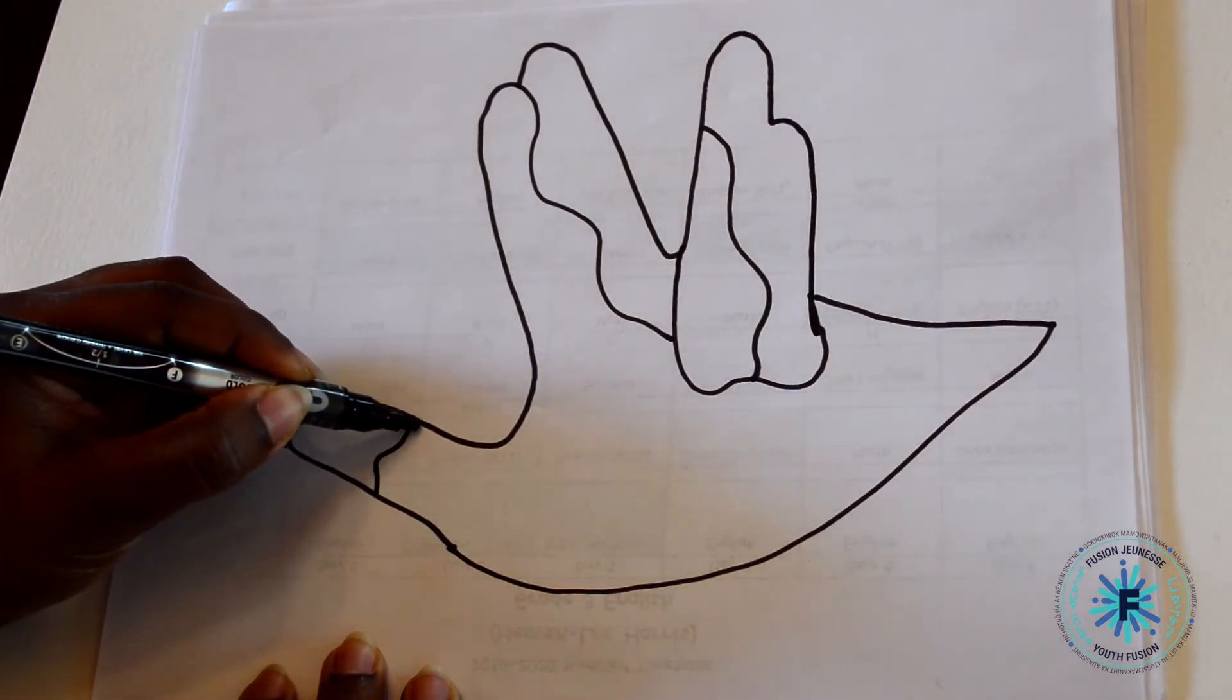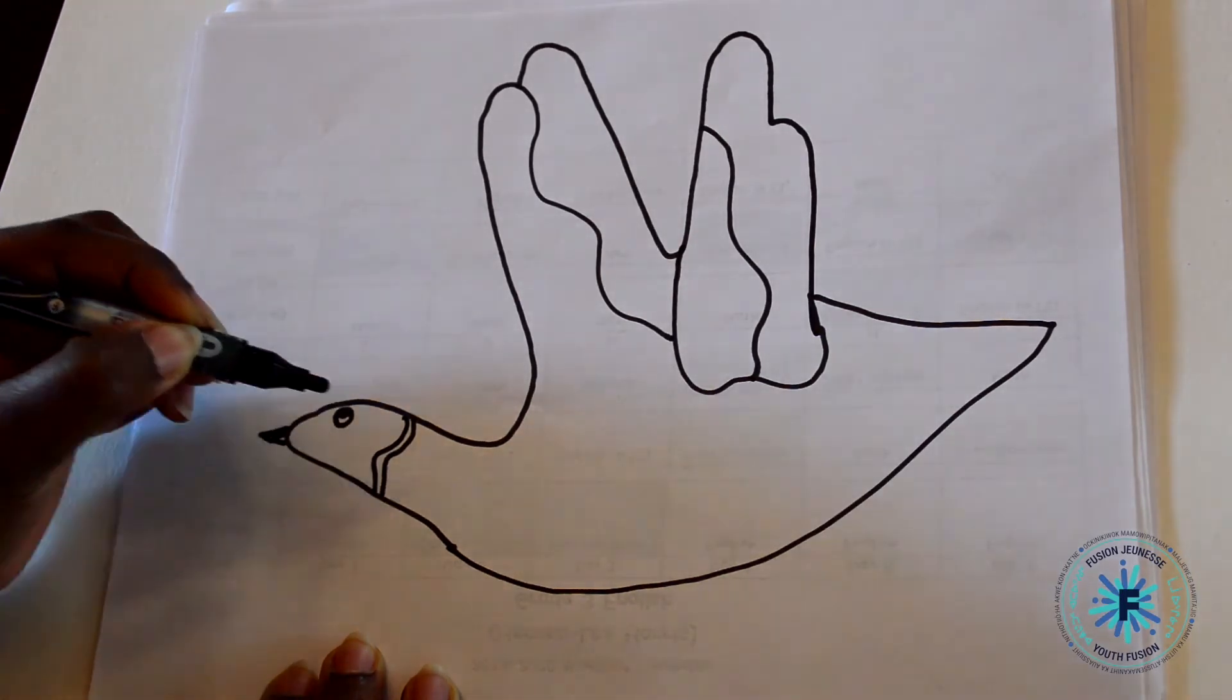Draw two S-shaped lines at the neck and the tail to make another pattern.